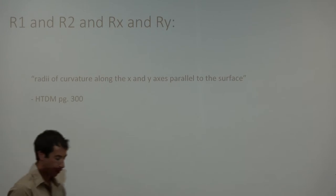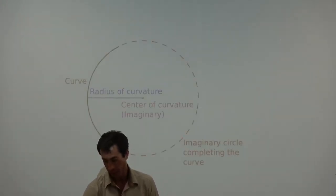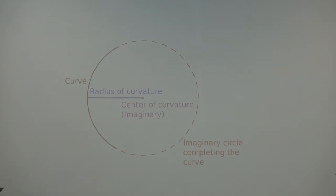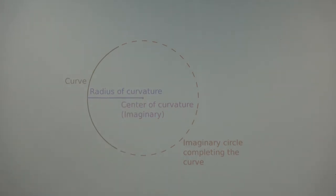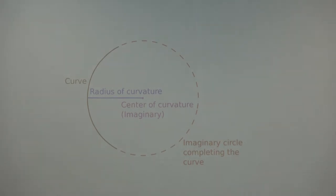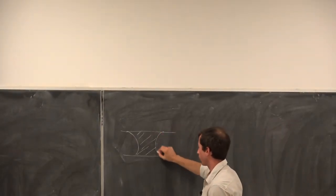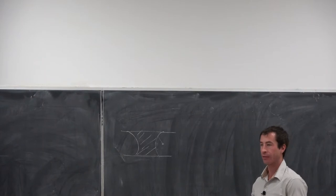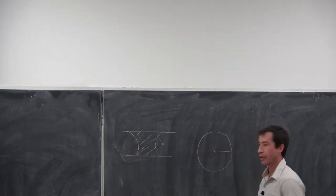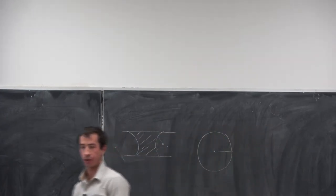The radii of curvature are defined along the x and y axes parallel to the surface. Radius of curvature is essentially the inverse of the curvature — where is the center of that radius? We generally think of a radius in terms of a circle, but for something like a capillary with water or a pore in a nanoparticle, the curvature is not a circle. That's why we use the nomenclature 'radius of curvature.'